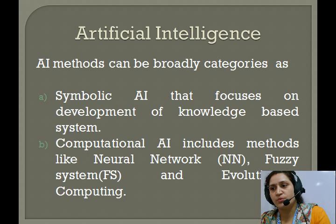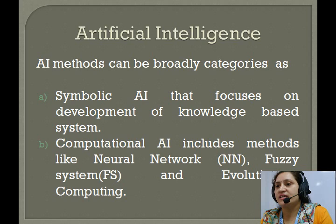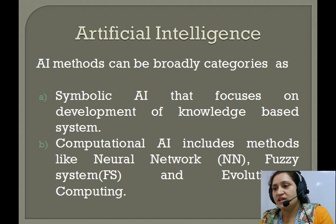AI comprises of certain methods, which are broadly categorized as two. The first one is symbolic AI, and the next one is computational AI. Symbolic AI focuses on development of the knowledge-based system, where we put all our experience into a knowledge base, and this knowledge base is further used to analyze how the system will respond once it is under supervised control. Computational AI includes methods like neural networks, fuzzy systems, and evolutionary computing, where it deals more with nodes and analyzing the nodes.